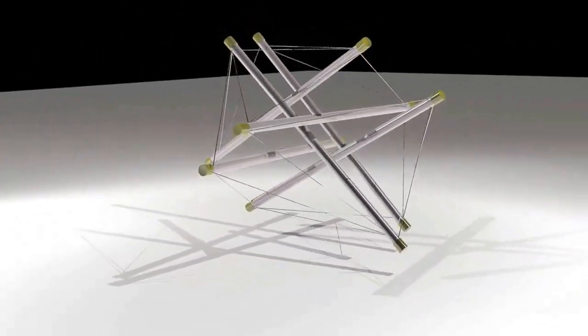We're using tensegrity structures, which are these tensile networks that are very shock absorbent and compliant, and we're using those to build robots or planetary landers that can land on another planet, absorb that impact shock, and then that very same structure is your robot that enables mobility on the planetary surface.